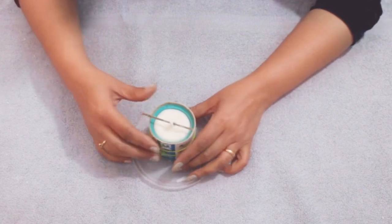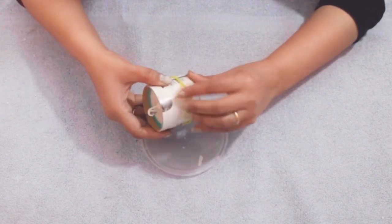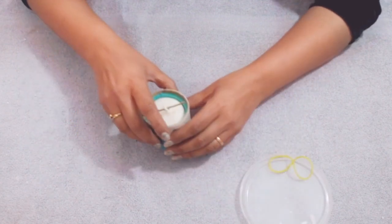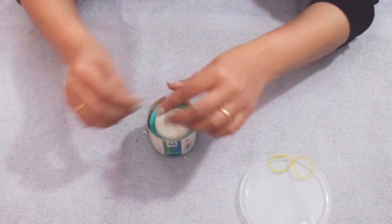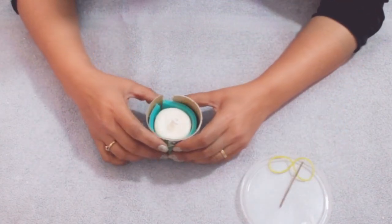This is how you demold your candle. Just remove the rubber band and everything will come out so easily. This is a super easy way to demold your candle.